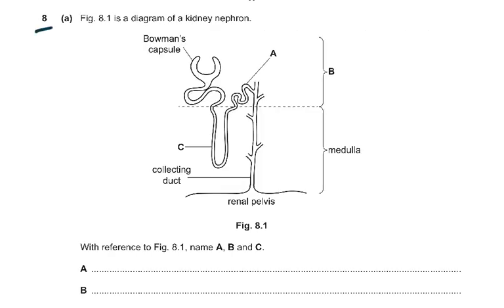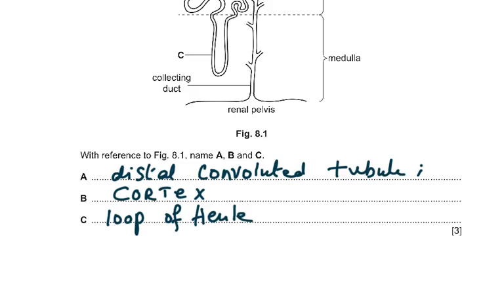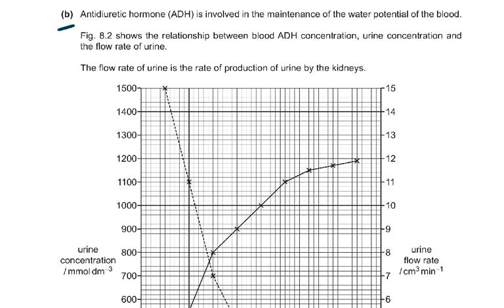Question number 8, figure 8.1 is a diagram of a kidney nephron showing the Bowman's capsule and labels A, B, and C. A is the distal convoluted tubule, B is the cortex, and C is the loop of Henle. Simply naming these gives you three out of three marks. Part B introduces anti-diuretic hormone ADH and its role in maintaining blood water potential.